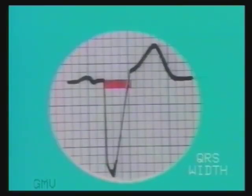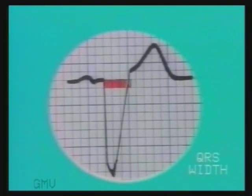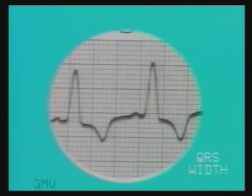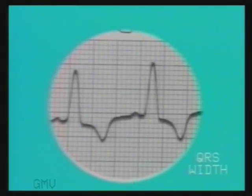The width of the QRS complex, or the QRS interval, is counted from the beginning of the Q or R wave, whichever is first, to the end of the QRS complex. Whenever the QRS complex in any of the leads is wider than 3 small squares, a bundle branch block is diagnosed.